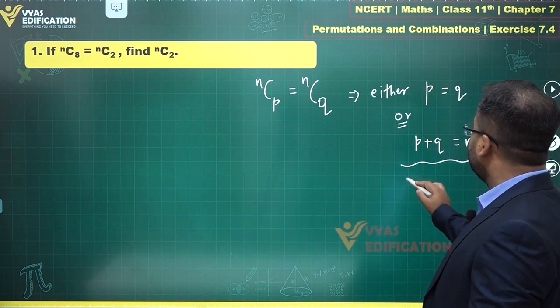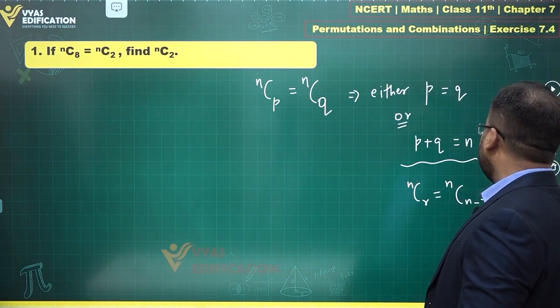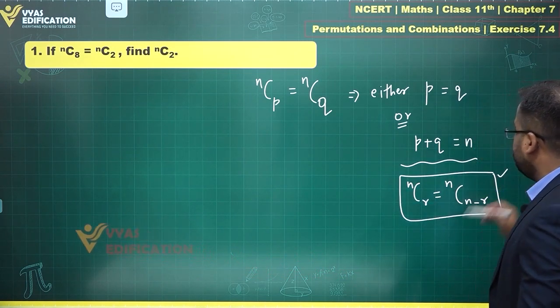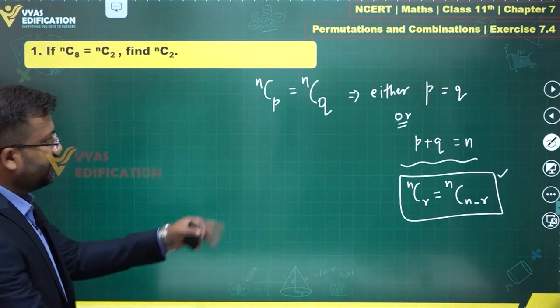This happens because NCR is also equal to NC(N minus R). This is true - NCR equals NC(N minus R). Because of this, that particular result holds.